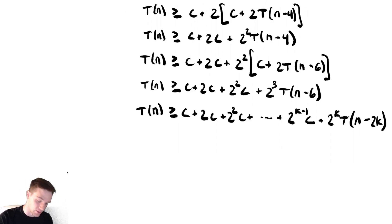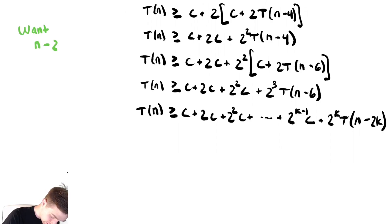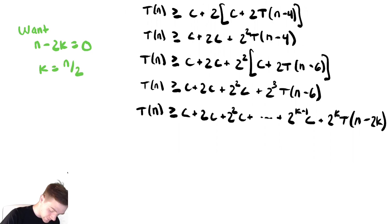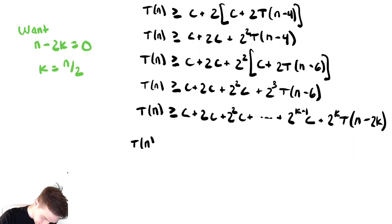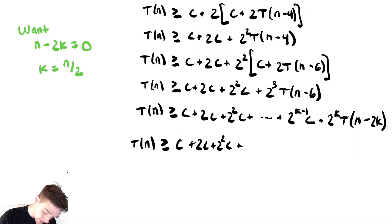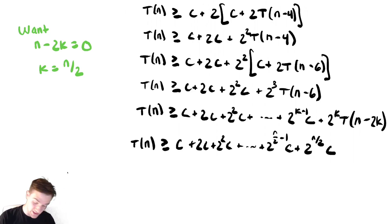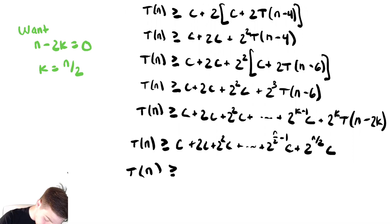Now let's use our base case. We want n minus 2k to equal 0, so k equals n over 2. Using that, T of n is greater than or equal to C plus 2C plus 2 squared C plus all the way up to 2 to the n over 2 minus 1 times C, plus 2 to the n over 2 times C.